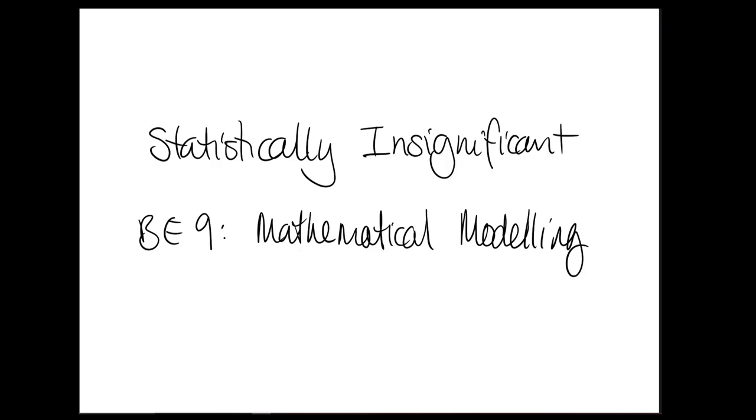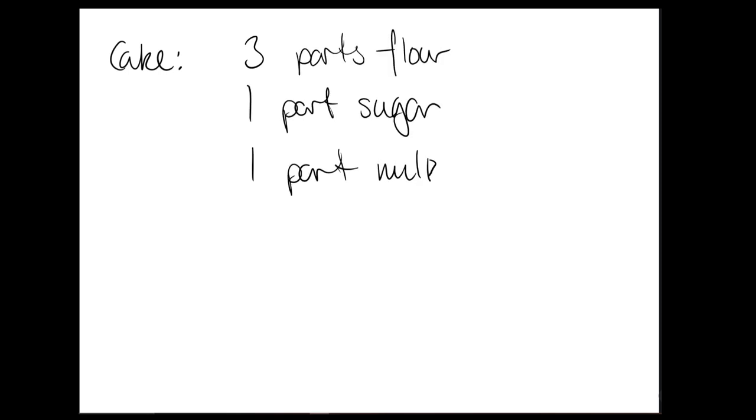One really common example of a model is a recipe. These use numbers to represent different amounts of stuff, which are usually related to each other in a ratio or proportion of some kind. If you have a recipe for cake, which is three parts flour, one part sugar, and one part milk. Not a great cake, but let's run with it. It doesn't matter what the units are here, so long as the ratio is the same.